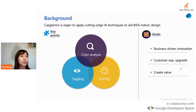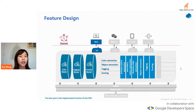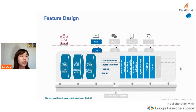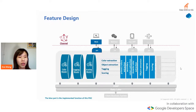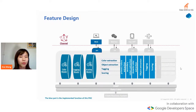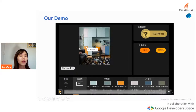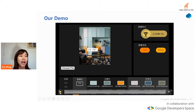We want to help our client deal with pain points through our AI solution, serving both consumers and designers. Our goal is to use deep learning algorithms to analyze customer preferences for color design, and to help AI boost the quality of the idea generation process for designers. We propose three models: a color analyst model, a tagging model, and an AI scoring model. The color model helps analyze and extract colors from pictures for designers. The tagging model identifies objects in images — for example, identifying tables or chairs. The AI scoring model evaluates image quality — whether a picture is beautiful or not.